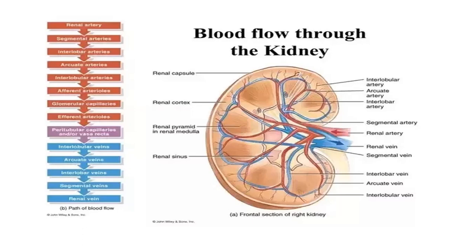Overall blood supply of the kidney: the renal artery is first divided into segmental arteries, which are further divided into interlobar arteries, then arcuate arteries, then interlobular arteries, and then into the afferent arterioles, which lead into the glomerular capillaries in the Bowman's capsule. After passing out of the Bowman's capsule, blood enters the efferent arterioles, then the peritubular capillaries, and from the peritubular capillaries into the interlobular veins, arcuate veins, interlobar veins, segmental veins, and finally the renal vein.